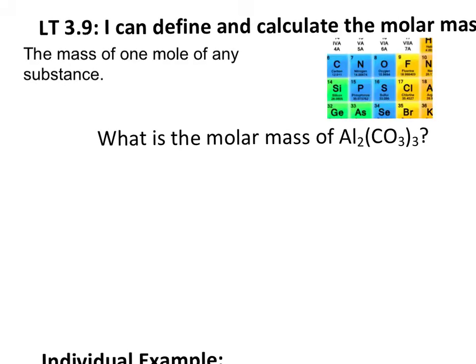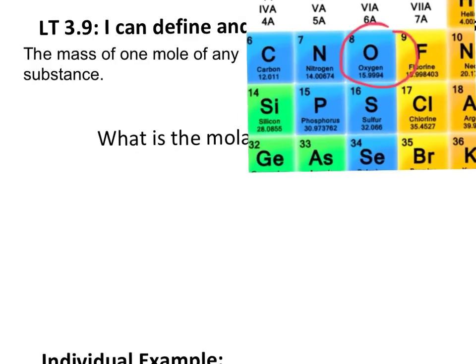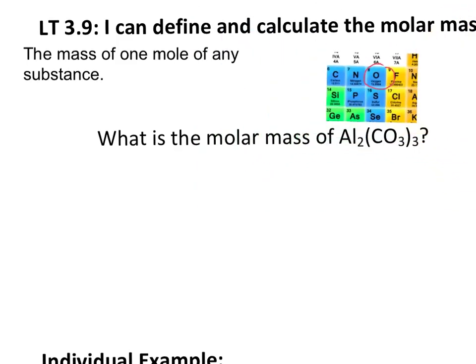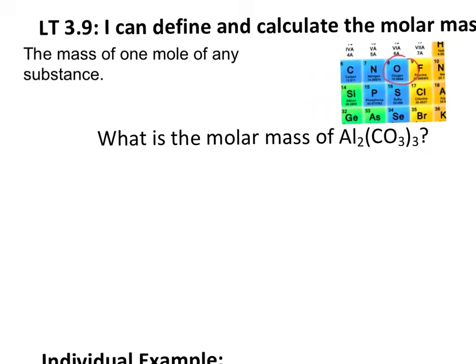We can actually find the molar mass for any substance or element by looking at the periodic table. If we zoom in here to oxygen, it's actually listed as 15.999. So we would say that the molar mass for oxygen is about 16.